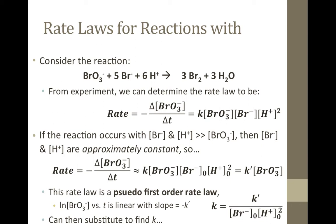If we plotted the natural log of bromate concentration versus time, we would get a linear plot, but the slope wouldn't give us the true value for the rate constant K. Instead, it would give us this pseudo-rate constant K'. But with that value, we can substitute and solve to find the rate constant K.